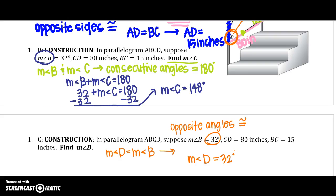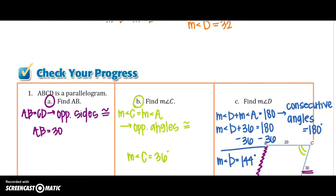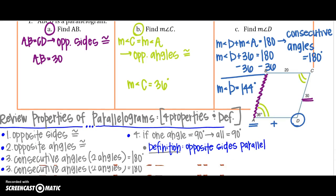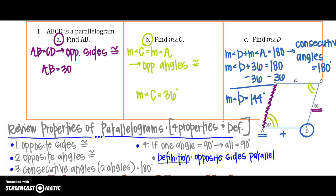It's your turn to practice those skills. Go ahead and pause this video, try the next three, check your progress, and then check your answers. Let's review those four properties and the definition. First, opposite sides of a parallelogram are always congruent. Second, opposite angles — the angles across from each other — are congruent. Third, consecutive angles are supplementary; they're right next to each other and add to 180. Fourth, if one angle equals 90, all the rest equal 90. And the definition: both pairs of opposite sides are parallel — hence the name.